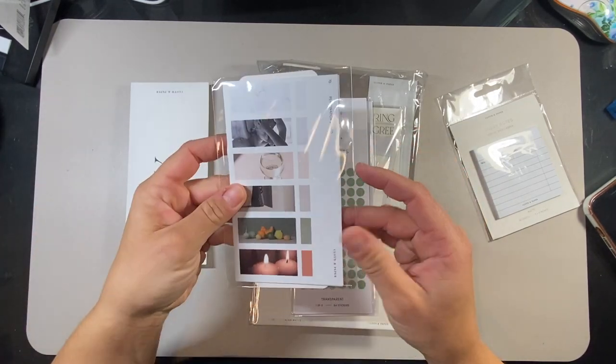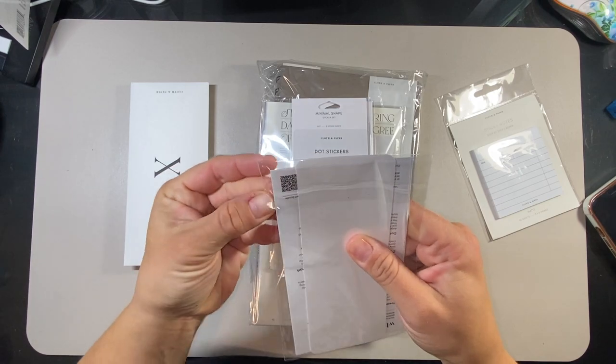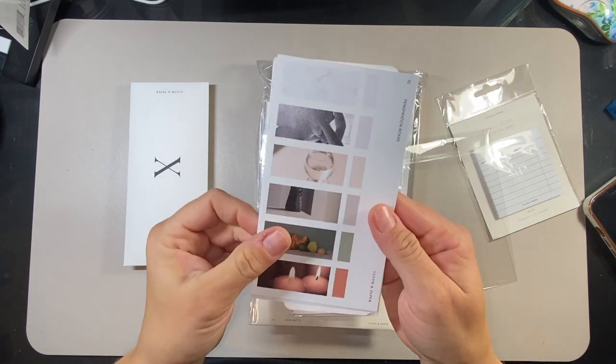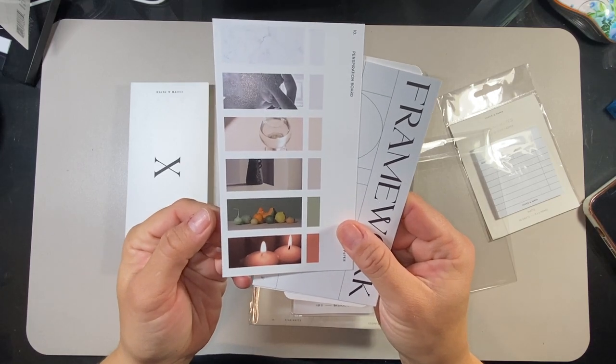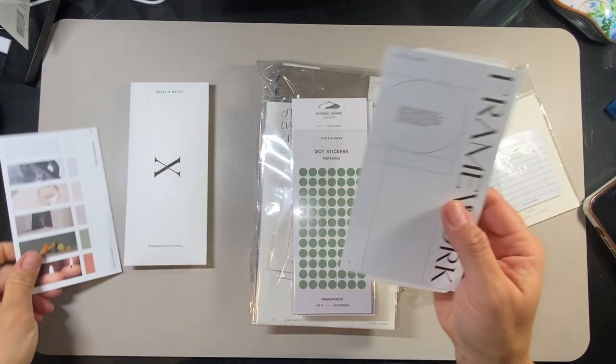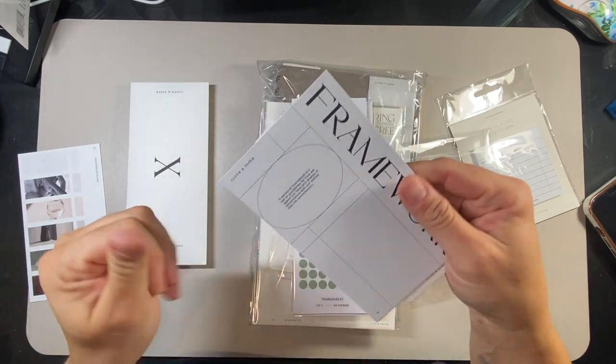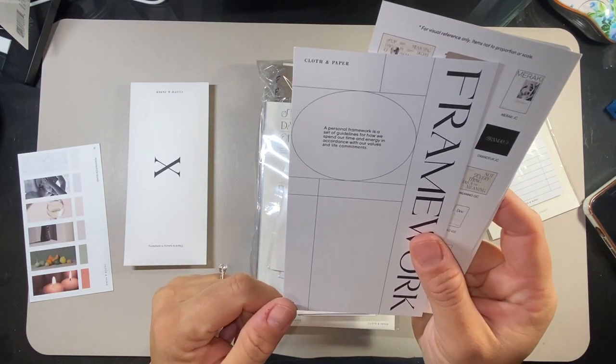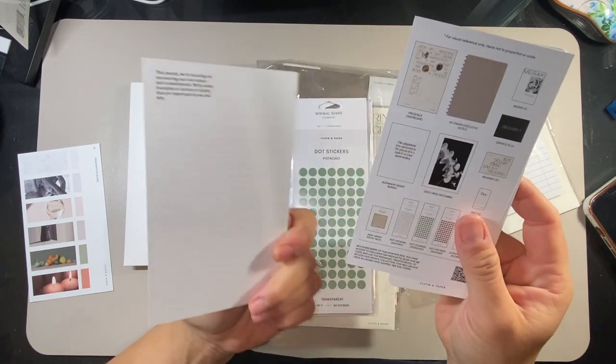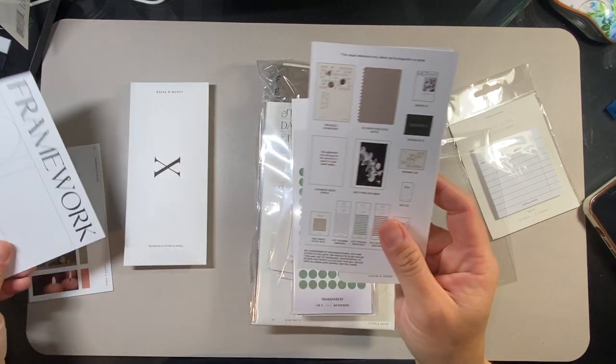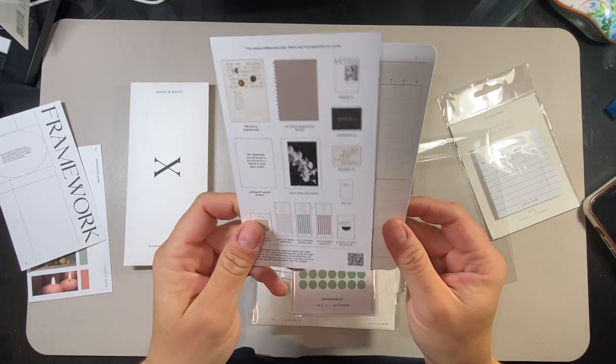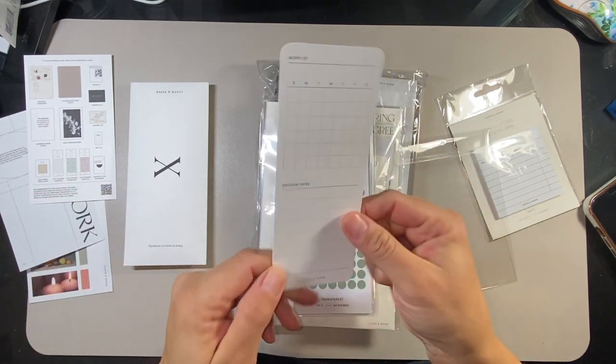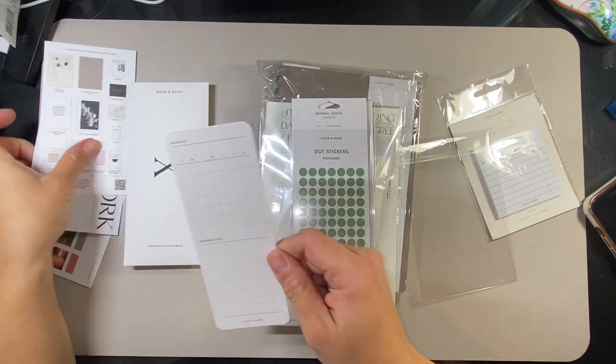So the first thing I'm going to go for is this little pack here. These are usually like the pen test card. These are the color palettes this month, which are really pretty. They remind me of very fall, November, October colors. The pen test sheet. I love this. It says Framework. A personal framework is a set of guidelines for how we spend our time and energy in accordance with our values and life commitments. Very similar to goals, I think. But I mean, it could be different for everybody. And this is what's inside the box. And then this is like the monthly little index card that you get.